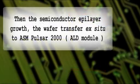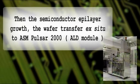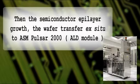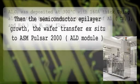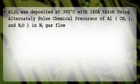Both layers are grown by MBE on semi-insulating gallium arsenide with 100 orientation. Then the semiconductor epilayer growth involves wafer transfer using XC2-2-ASM Pulsor 2000 LD Module. Aluminium oxide is deposited at 300 degrees Celsius, 160 angstroms thick, using alternately pulsed chemical precursors of trimethyl aluminum and steam water in nitrogen gas flow.